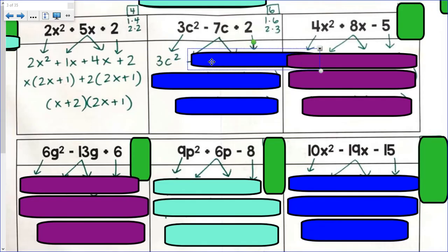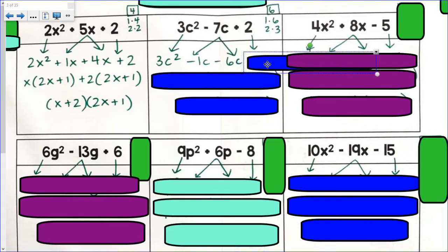So this would be 3c² minus 1c minus 6c plus 2. So again, notice we're purposely taking this trinomial. We're forcing it to become a four-term polynomial. We are breaking apart the middle term using the factors that we chose from here. And then we do factor by grouping.